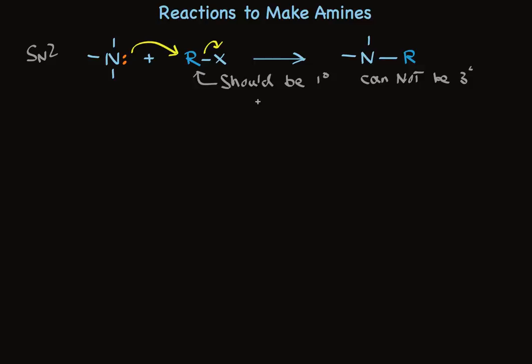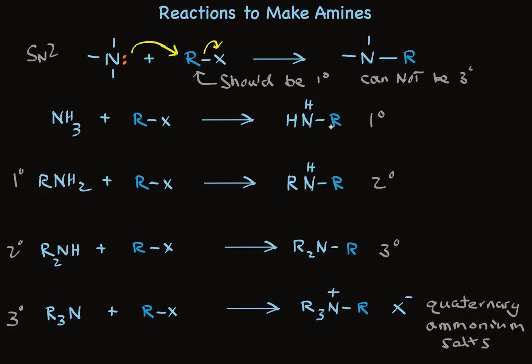This reaction works whether you start with ammonia, a primary amine, a secondary amine, or a tertiary amine. If you use ammonia, you make a primary amine, and primary amines react with the same alkyl halide to make secondary amines. Secondary amines make tertiary amines, and tertiary amines make quaternary ammonium salts.